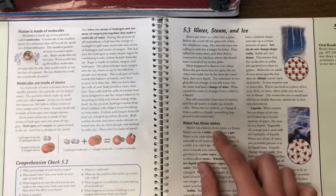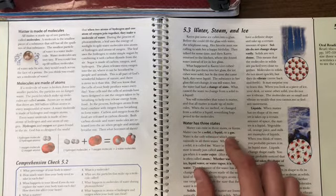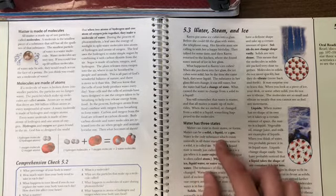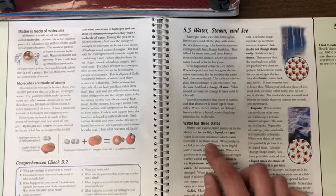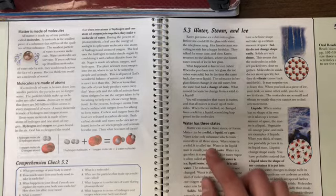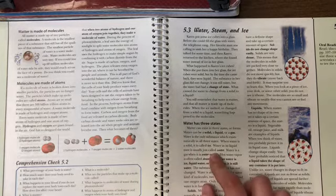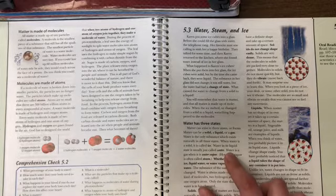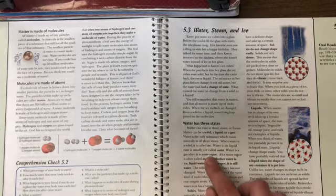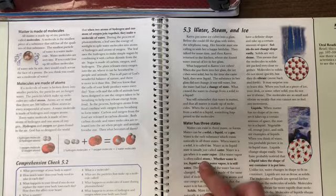Matter can exist in three states or forms. Matter can be a solid, a liquid, or a gas. Water is the only substance which exists naturally in all three states. When water is a solid, it is called ice. When water is a liquid, we usually just call it water. Water is a gas when it is water vapor. Hot water vapor is often called steam.